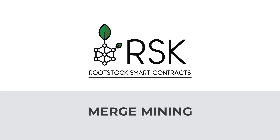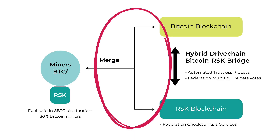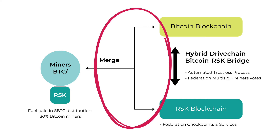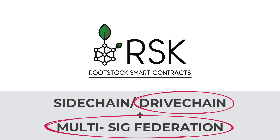Those miners are going to receive an extra source of income, which is a fee based on SBTC — a token on top of the RSK platform. This is very beneficial because the miners have an extra income source while using the same hashing power to secure an extra blockchain, which is the RSK blockchain. The RSK blockchain is a unique combination between a sidechain and a drivechain plus a multi-signature federation.